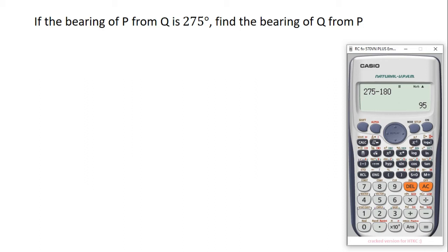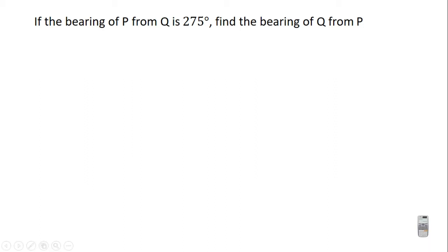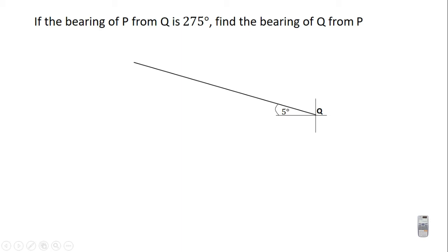Let's learn how to use the diagram to find it. Draw the diagram for the bearing given — that is, P from KO. If you draw P from KO, this is the diagram you are going to have. As before, if you want to understand why the angle here is 5 degrees, watch the video on three-point bearings, where it is explained in detail.